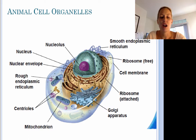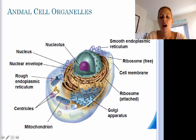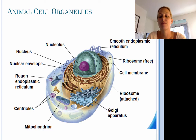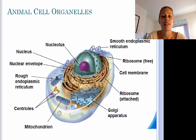Next is the mitochondria, which is the site of cellular respiration for the cell. Onward, we have the Golgi apparatus, which is responsible for modifying and packaging proteins and other things for the cell. We've also got our cell membrane, which is responsible for allowing substances to move into and out of the cell, as well as protecting the cell.